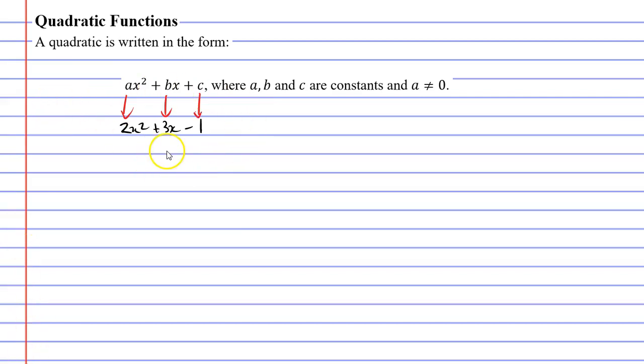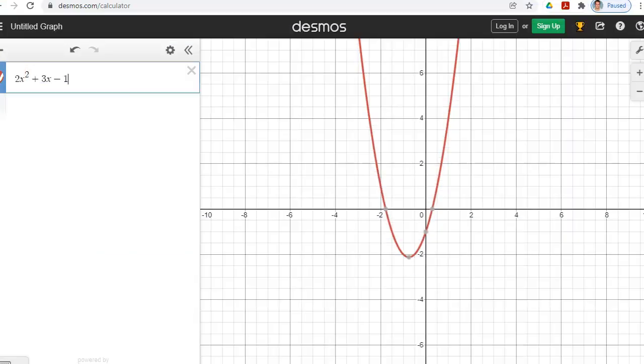So what type of curve will we get when we graph a quadratic? Well, let's take this quadratic 2x squared plus 3x minus 1 and put it into Desmos. You may notice that we get this parabolic shape, and all quadratics when they are graphed will make a parabola.